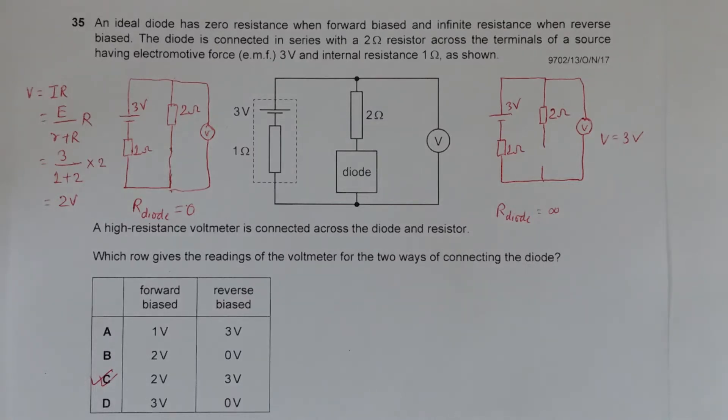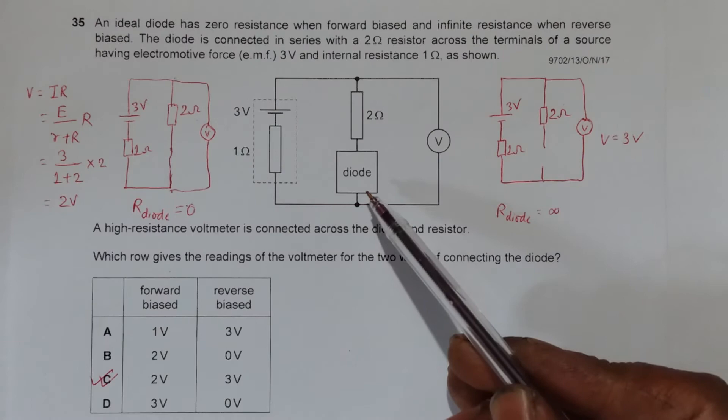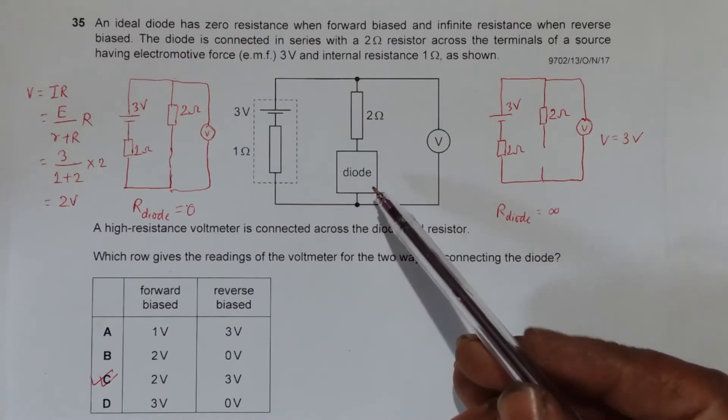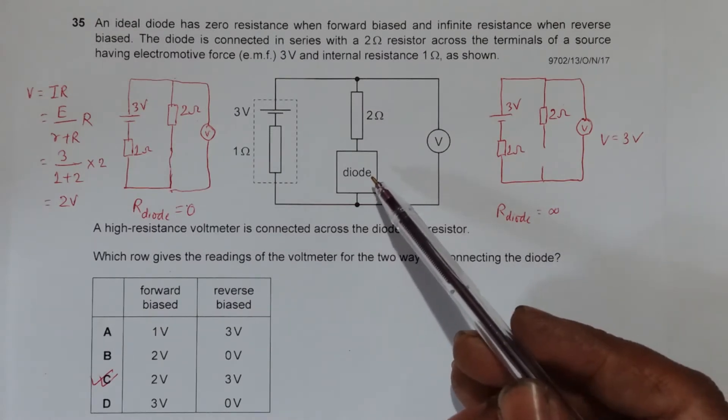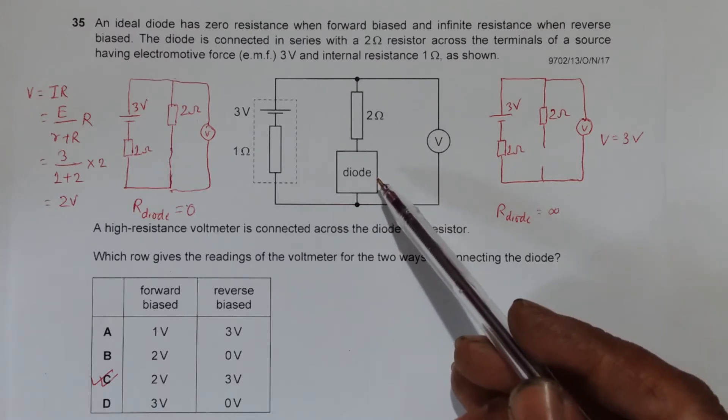This is question number 35 of paper 13, October November session 2017. It says that an ideal diode has zero resistance when forward biased. The diode is over here with zero resistance when forward biased, which is a special mode of connection, and infinite resistance when reverse biased, which is another mode of connection.